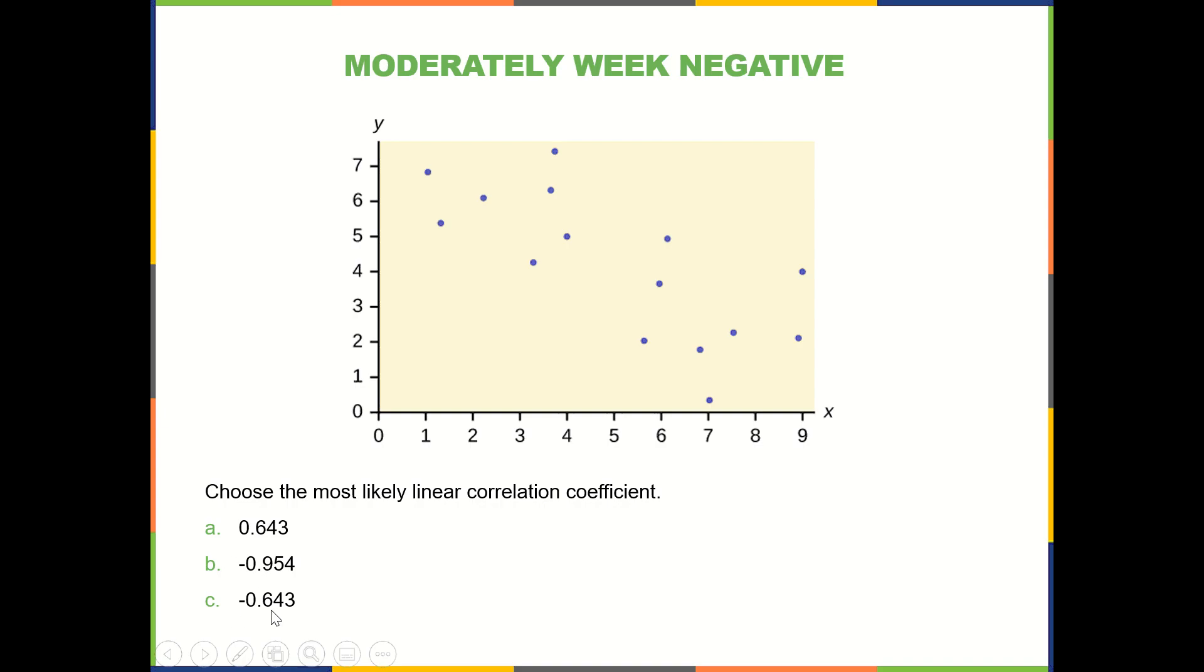So which one of these would you think is the best option here? So obviously B or C, since they're both negative. B is a little too strong, or maybe a lot too strong for what we see here. So the best option is C.